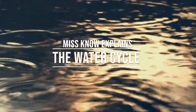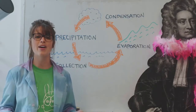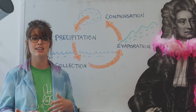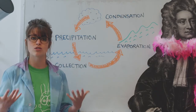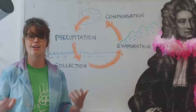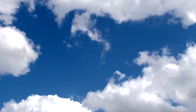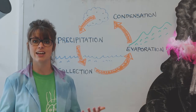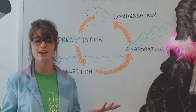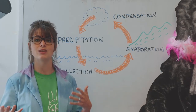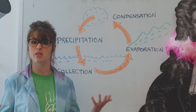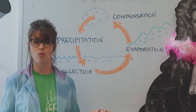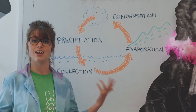This is the water cycle. The first step we're going to talk about is precipitation. Precipitation is the process of rain or snow falling from the sky to the ground. Now that the rain is falling from the sky, water is collected in the process of collection — that's when the rain soaks into the soil, into the ground, and into the plants, and then collects in bodies of water like streams and lakes and oceans.